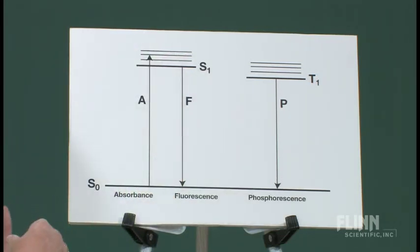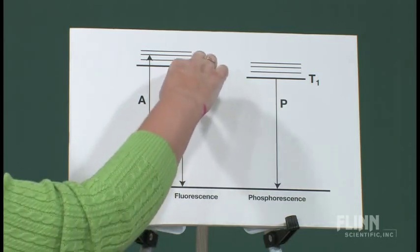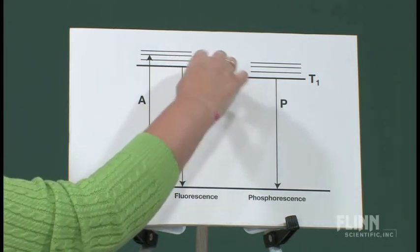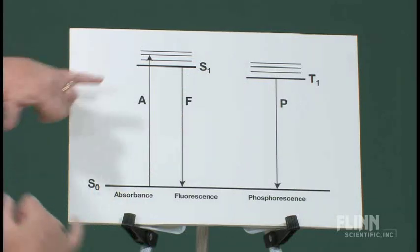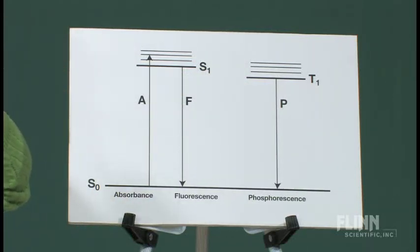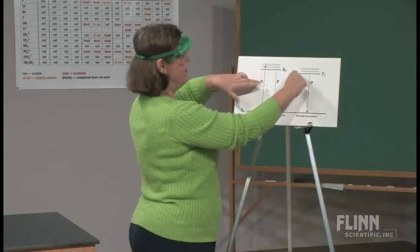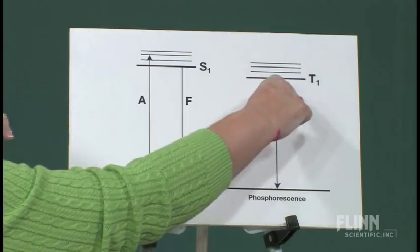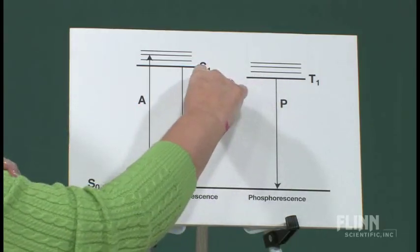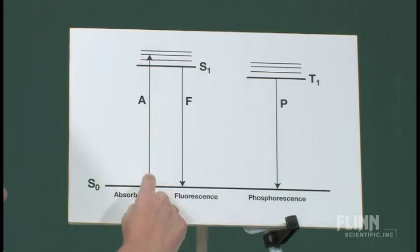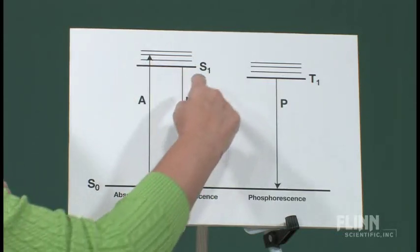But instead of going back to the S1 state, remember we said those closely spaced vibrational energy levels were going to be important because you have a triplet excited state which is a little lower in energy than the singlet. You can only absorb directly from a singlet to a singlet, but you've got these closely spaced vibrational energy levels.